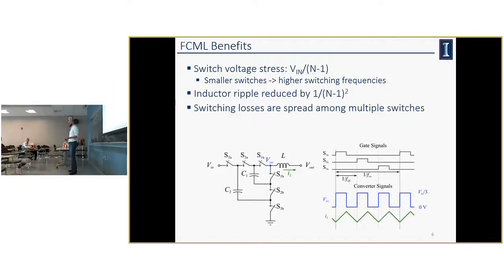You do get some benefits though. The voltage stress across your switches is divided by N minus one. So the more levels, the more you reduce the stress of your switches. This allows you to use smaller switches. They have less parasitic capacitance. You can switch them faster. When you can switch them faster, you can reduce the size of your passive components. The inductor ripple is reduced by N squared, or N minus one squared. So you can reduce the size of your inductor. And then finally, instead of having two main switches where all the power is going through those two main switches, now you're spreading this out across your multiple switches. And hopefully at a much lower power usage as well.